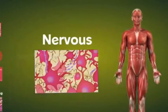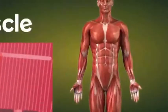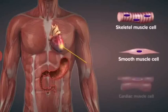The third tissue type is the muscle tissues that are responsible for the movement in our body. The three types of muscle tissues are skeletal, smooth, and cardiac.